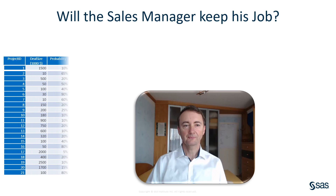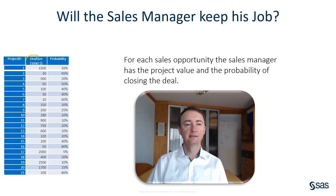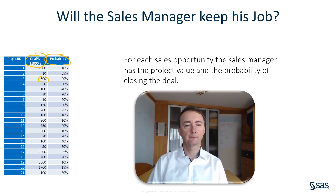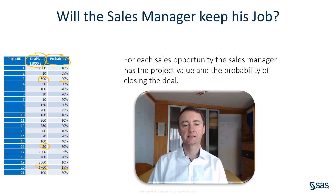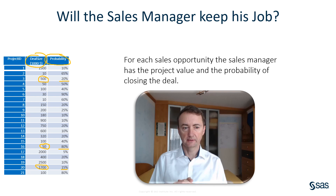So the question is: will the sales manager keep his job? Our sales manager has, close to year-end, 21 projects in his sales pipeline which he still can close in the actual year. For each sales opportunity, the sales manager also has the deal size — you see it here in $1,000 — and the estimated probability that this deal or project might still come in this year. For example, there are projects of $500,000 which he estimates will come in with a 20% chance, others of 1.7 million which might come in with a chance of 15%, and then other projects of maybe 50,000 euros where he estimates an 80% chance of coming in.